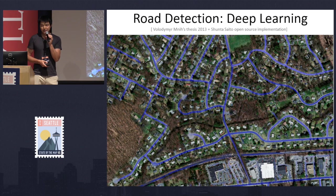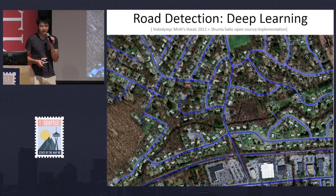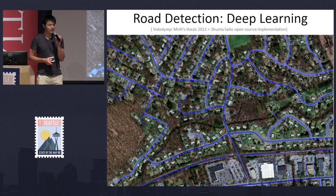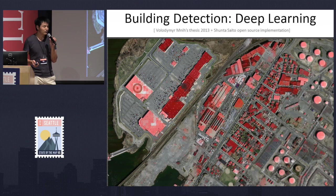In comparison, this is a dissertation from Vladimir three years ago with an open source implementation on how we can use deep learning to detect roads using satellite imagery. You can see the quality is amazing. At this level of quality, we can already extract roads automatically from satellite imagery. The same thing applies to buildings, and you can see the quality is equally good — it's the same model on the same set of data.